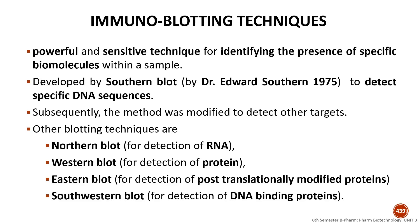The Southern blotting technique was developed by Dr. Edward Southern in 1975, and it is used to identify a specific DNA sequence. Other blotting techniques include northern blotting for detection of RNA, western blotting for detection of proteins, eastern blotting for detection of post-translationally modified proteins, and south-western blotting for detection of DNA binding proteins.